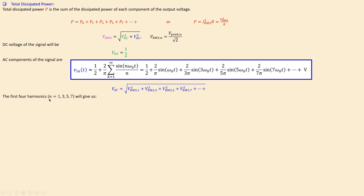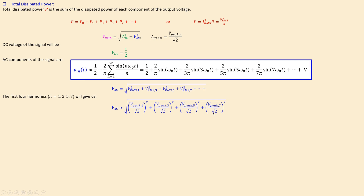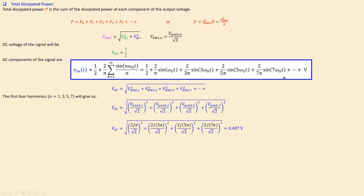Taking n = 1, 3, 5, 7 (the odd harmonics), the peak amplitudes are: 2/π for the first harmonic, 2/(3π) for the third, 2/(5π) for the fifth, and 2/(7π) for the seventh. Each amplitude is divided by √2 and then squared. Using this formula for each of the four harmonics gives the AC RMS contribution.